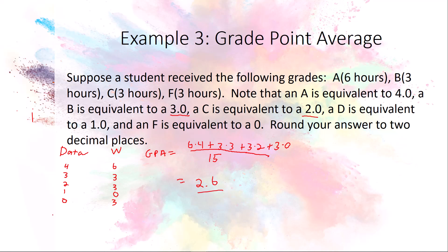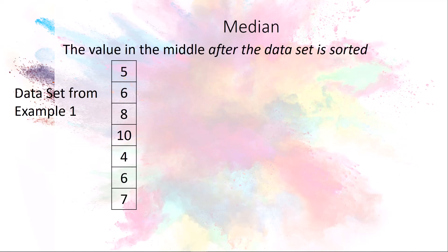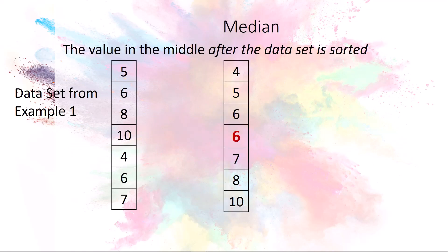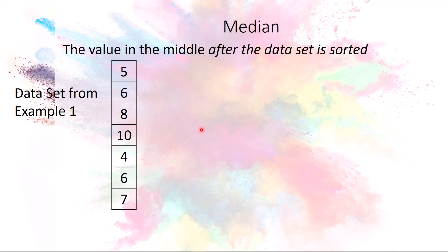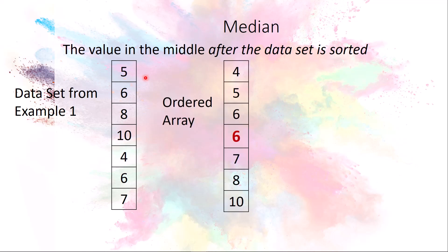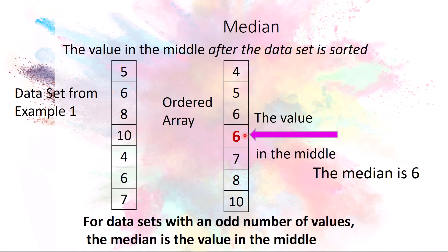Now for the median. The median is the number in the middle. First, sort the data set. Using the data from Example 1, once sorted, we have seven elements — an odd count. The number in the middle has three values above it and three below it. That middle number is 6, so the median is 6.